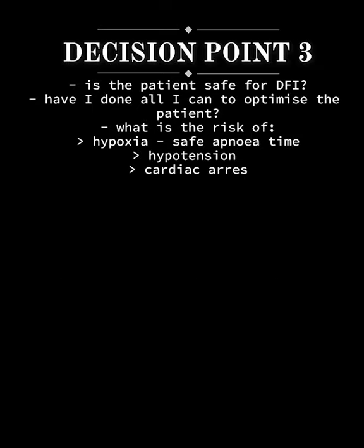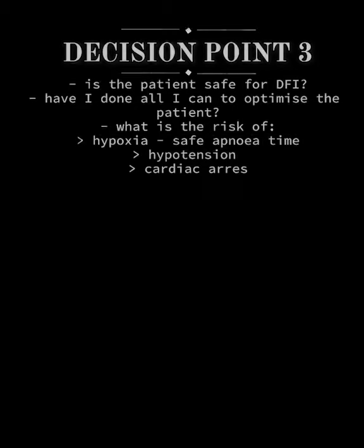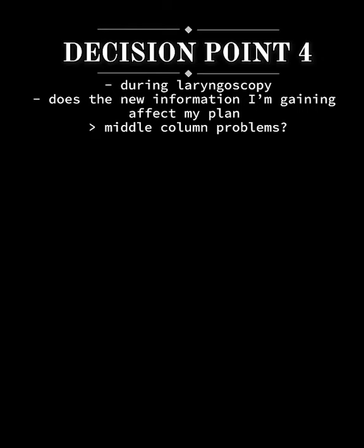After optimizing the patient, we have a new decision point: we need to ascertain whether the patient is still of more benefit than risk, ensuring we've done everything to optimize them and make them safe for the procedure. The final fourth decision point occurs during the procedure itself, when we gain information by going into the oropharynx with the laryngoscope — particularly about the glottic column — which informs our plan and which techniques are likely or unlikely to be successful.